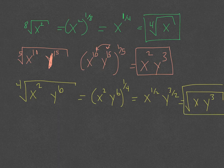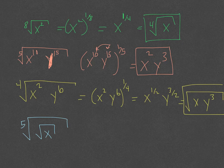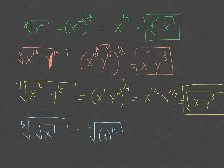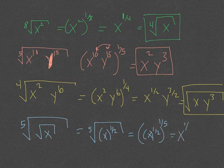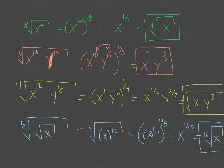For the fifth root of the square root of x: rewrite the square root as x to the 1/2 power, so we have the fifth root of x to the 1/2. Multiplying 1/2 times 1/5 gives x to the 1/10, which is the tenth root of x. We can simplify even nested radicals by converting to fractional exponents and then back to radicals.